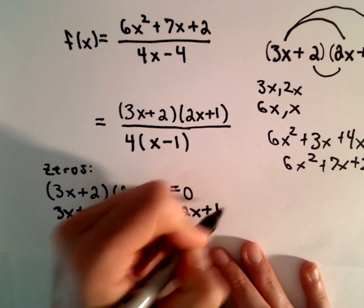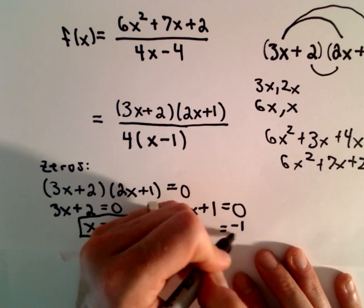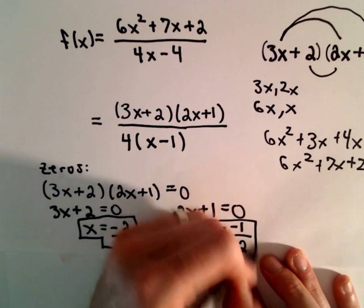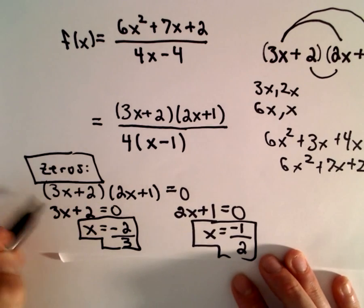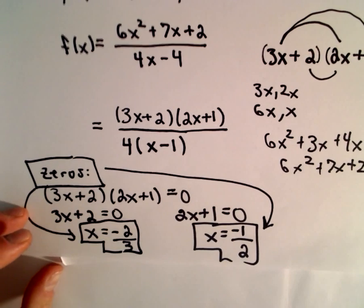Likewise, we have 2x + 1 = 0. Well, if we subtract 1 and then divide by 2, we'll get x = -1/2. Those will be our zeros: x = -2/3 and x = -1/2.